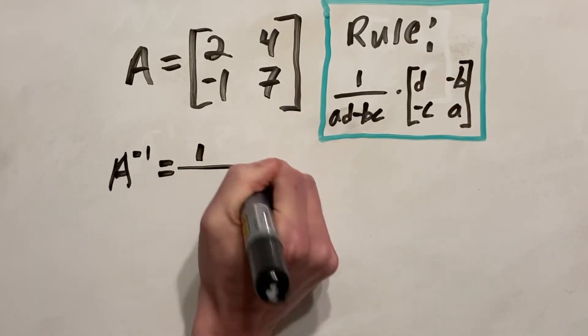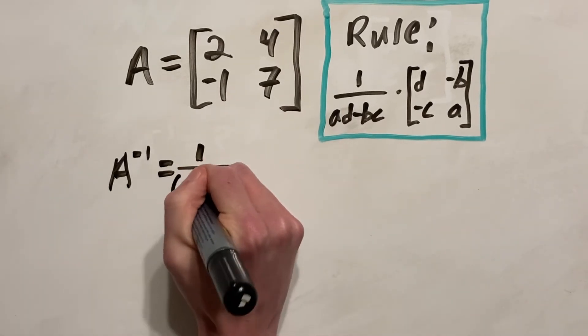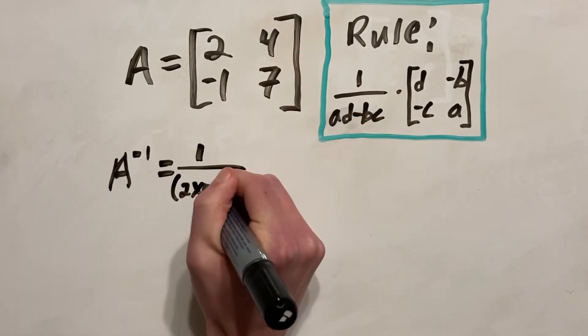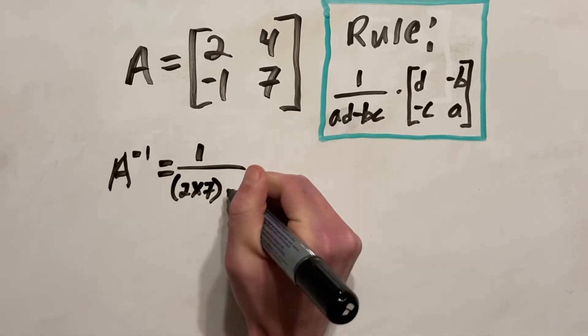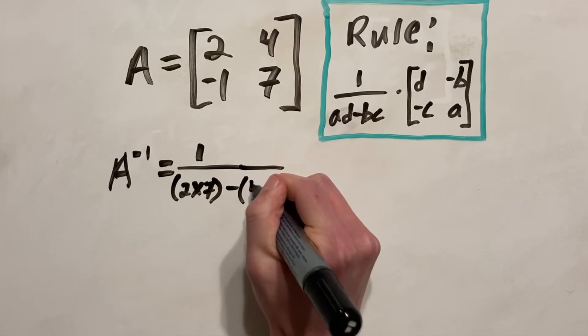So A to the power of minus 1, or our inverse of our matrix, is equal to 1 over our A times D. That's 2 times 7 minus our B times C, which is 4 times negative 1.